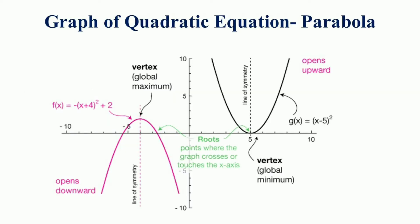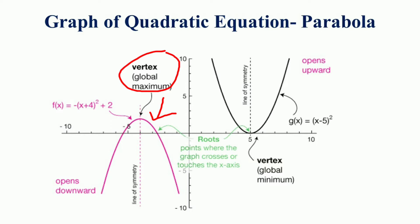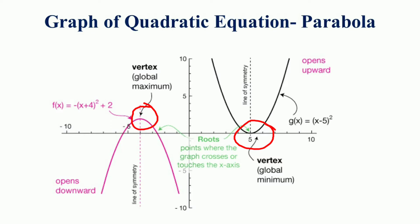The graph of the quadratic function is a parabola. A parabola is characterized by its vertex — the lowest or highest point — and the direction in which it opens, up or down. The vertex of any parabola is either a global maximum, the highest point, or a global minimum, the lowest point. It is the point where the slope of the curve switches from positive to negative or negative to positive.